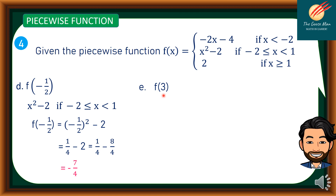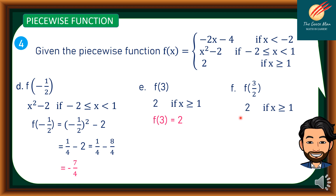For f(3): x = 3 falls in x ≥ 1, so f(3) = 2, a constant function. For f(3/2): x = 3/2 also falls in x ≥ 1, so f(3/2) = 2 as well. That ends our discussion on piecewise functions. This is Teacher Onin de Guzman — don't forget to subscribe to my channel so you'll be notified about new videos. Thank you!